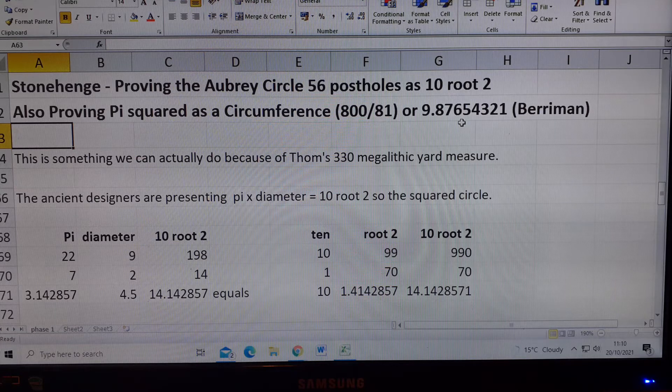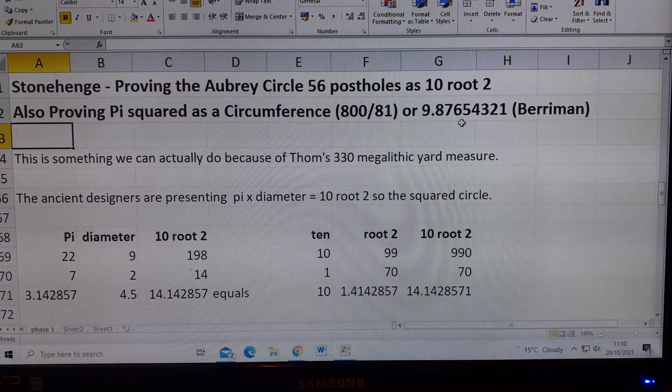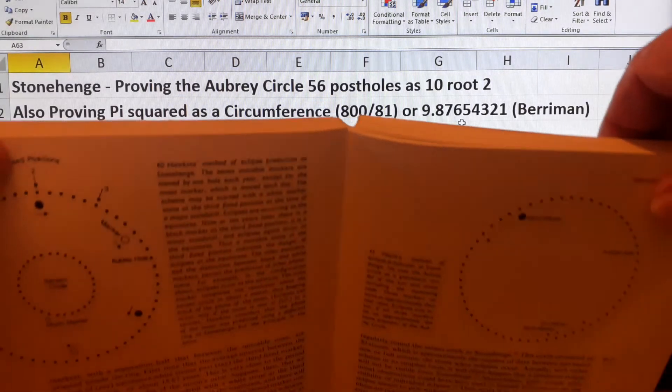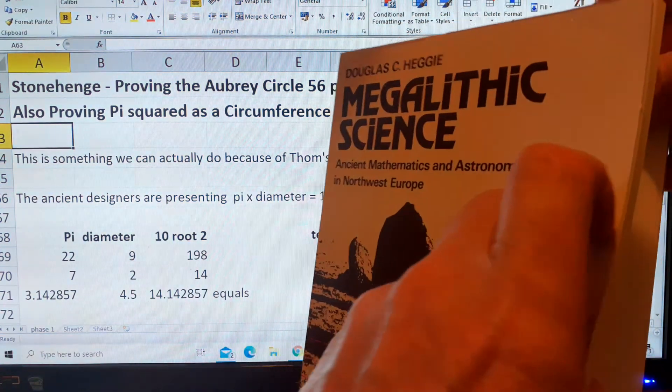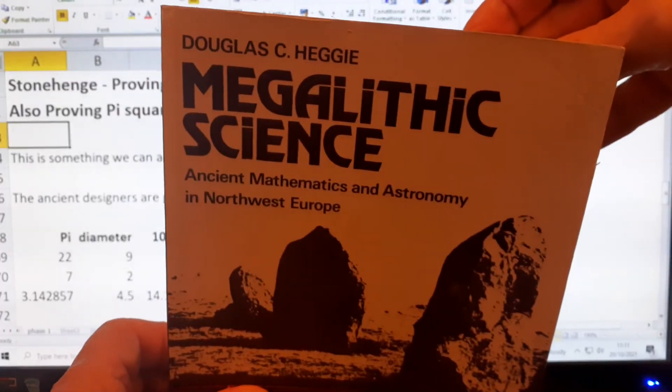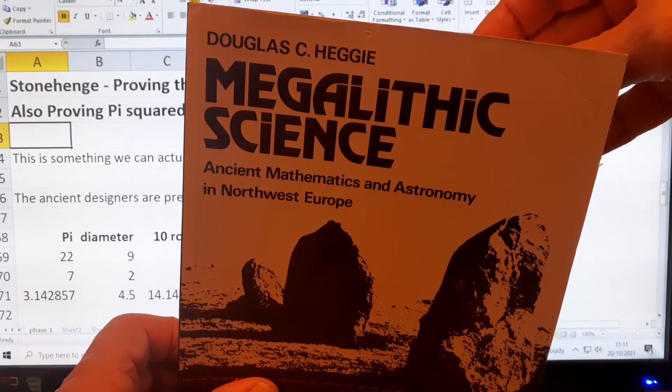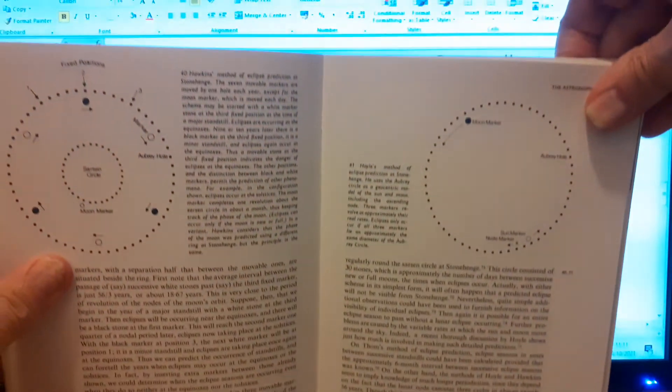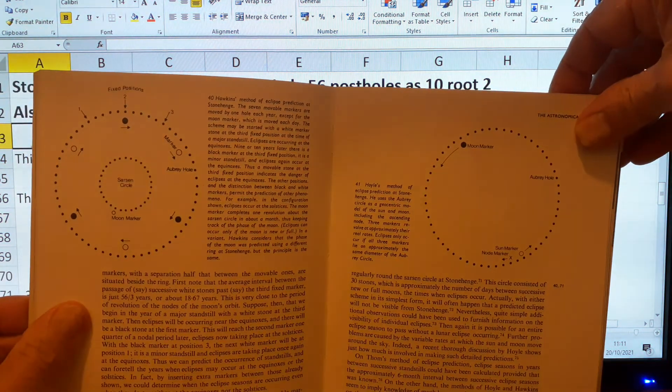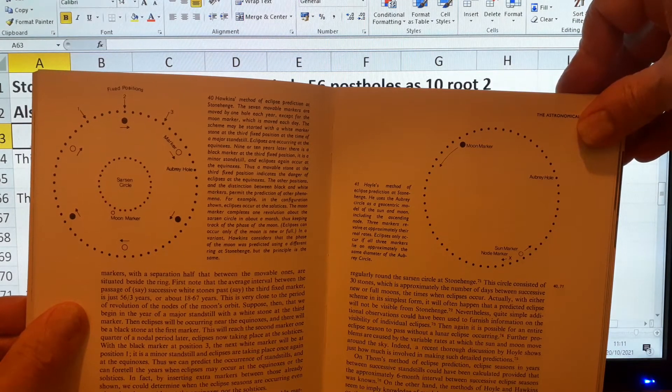First of all, I'm going to show you two examples of how these 56 post holes have been studied. This book is by Douglas C. Heggie, called Megalithic Science, Ancient Mathematics and Astronomy in Northwest Europe. He's looking at the work of two very famous professors, Professor Hawkins.